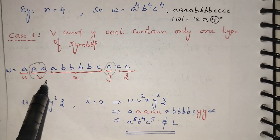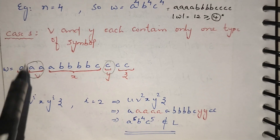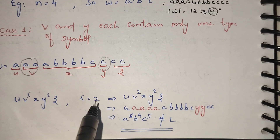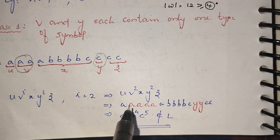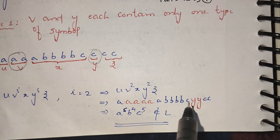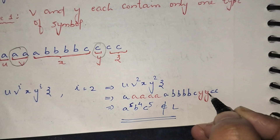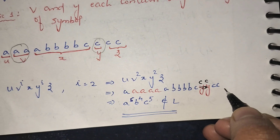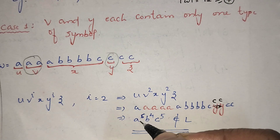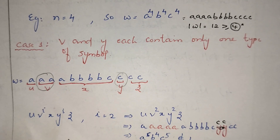We split the string: the first 'a' is u, two a's are taken as v, the remaining part up to c is x, and one c is taken as y. We divide into five parts and pump v and y. Suppose i = 2: we get 6 a's, then 4 b's, then 5 c's — that is a^6 b^4 c^5. This does not belong to our language because we need equal numbers of a's, b's, and c's. So this string is not in the language, proving it is not context-free.